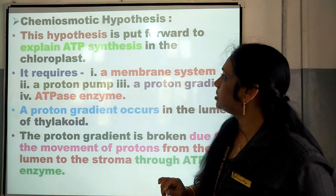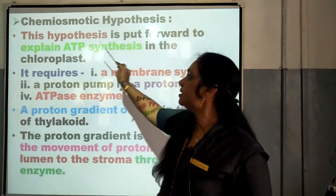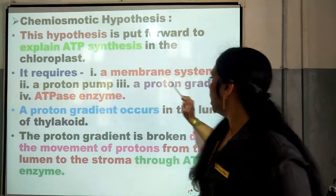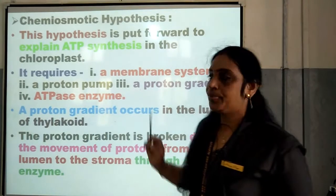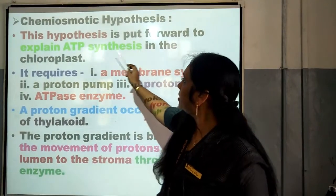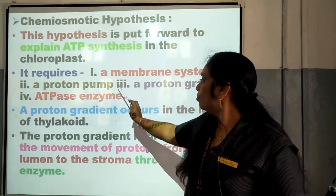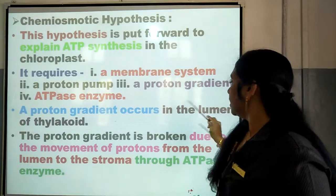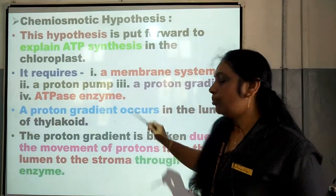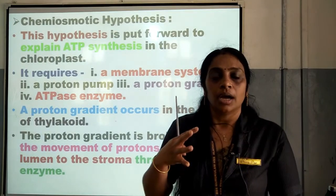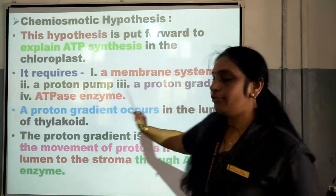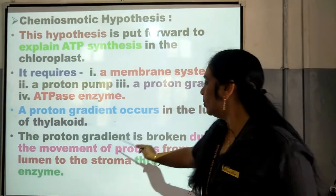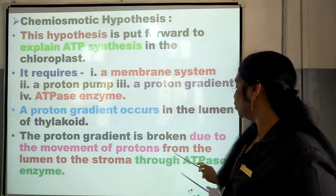The hypothesis explains how ATP is synthesized in the chloroplast, and it requires a membrane system, a proton pump, a proton gradient, and ATPase enzyme. So the formation of ATP synthesis requires a membrane system, a proton pump, a proton gradient, and ATPase enzyme. Now a proton gradient occurs in the lumen of thylakoid. A proton gradient — that is, a difference in the accumulation of protons — is taking place in the lumen of the thylakoid into the chloroplast. The proton gradient is broken due to the movement of protons from the lumen to the stroma through ATPase enzyme.